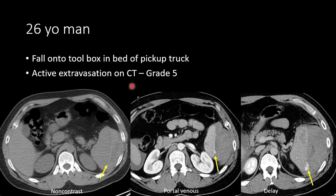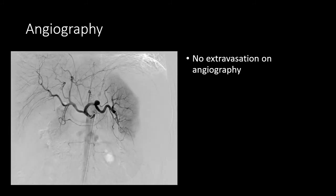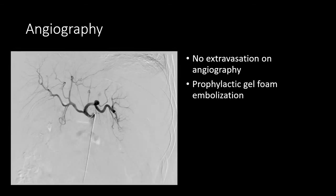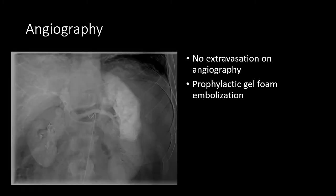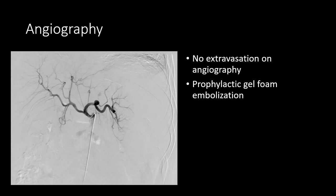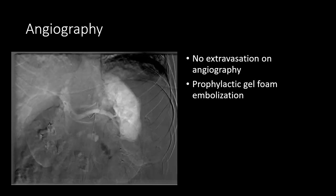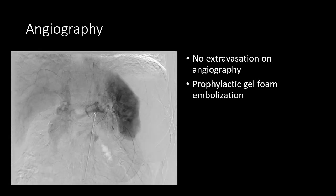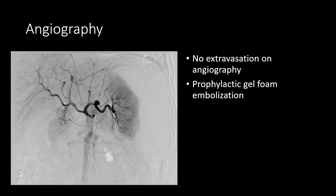Because of the changing size and persistent density of this abnormality, this is more consistent with active extravasation into the peritoneal space — a grade 5 splenic injury. The patient went to angiography, but no active extravasation was evident despite the CT imaging findings. The patient was prophylactically embolized with gel foam. At times, with expanding hematomas or appropriate patient positioning, there can be tamponade of active extravasation, impacting the diagnostic sensitivity of angiography. Gel foam embolization can reduce the risk of re-bleeding from future patient movement or positioning.